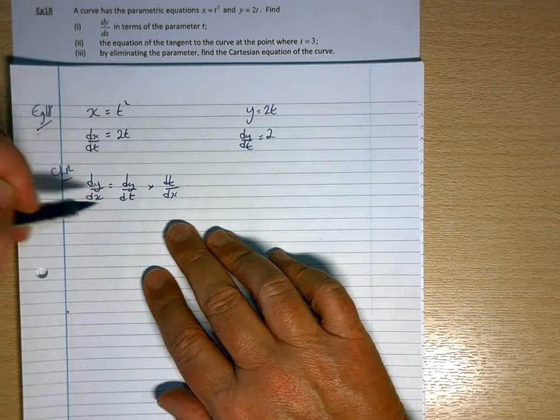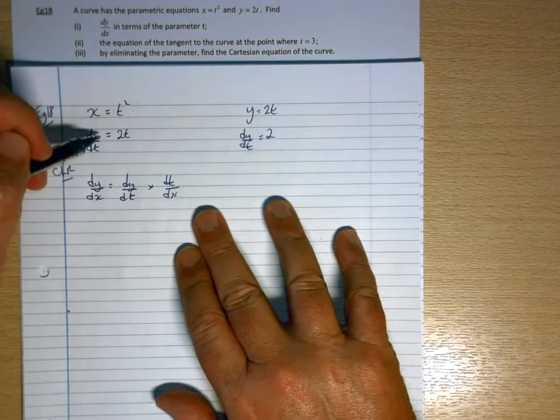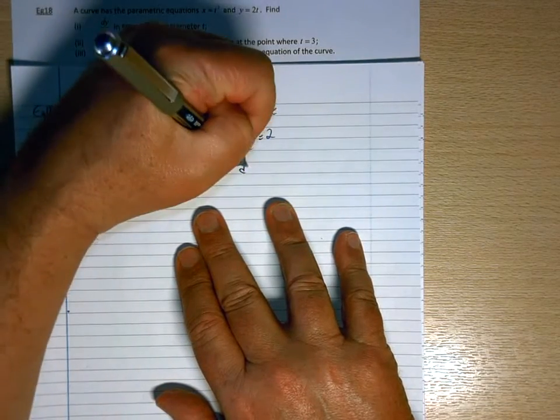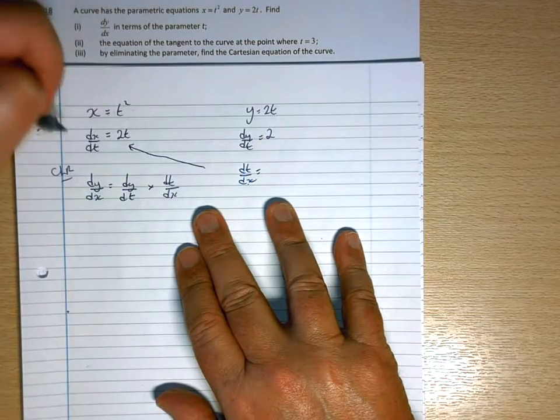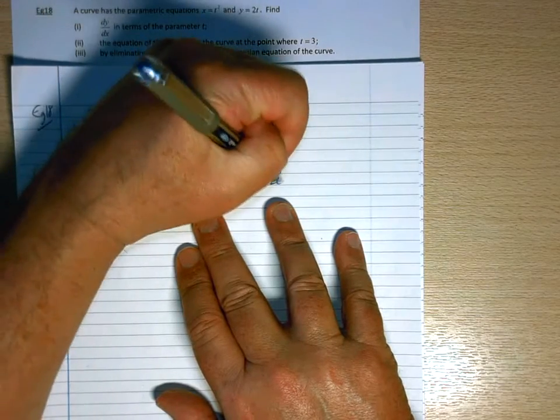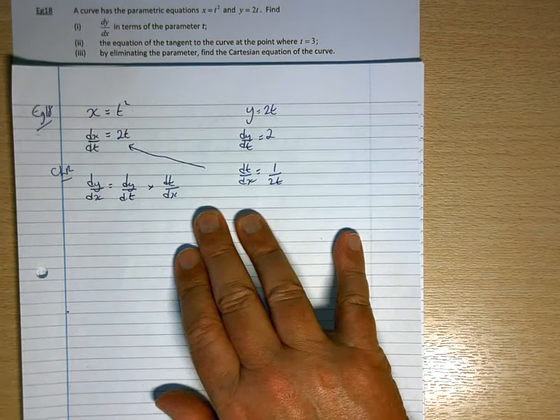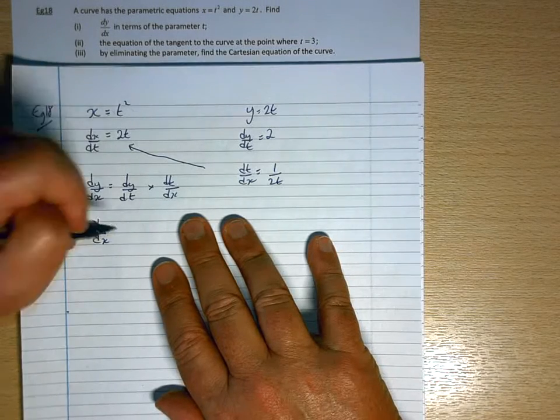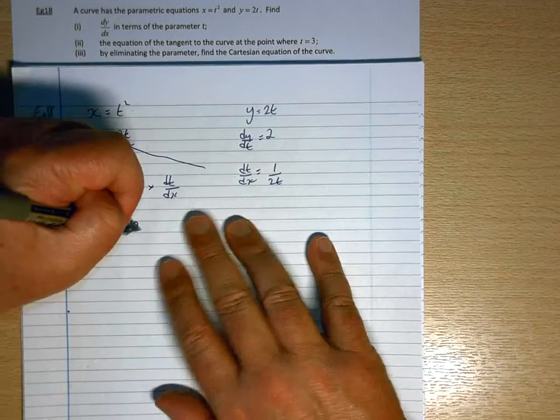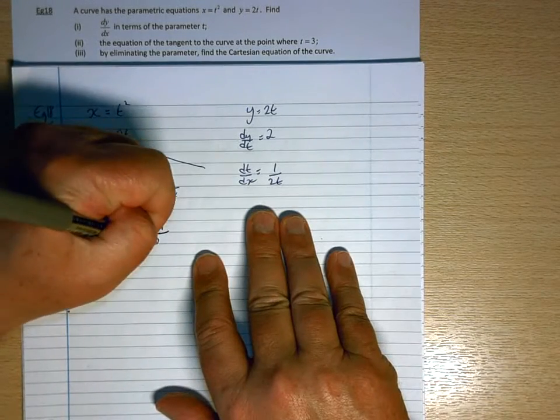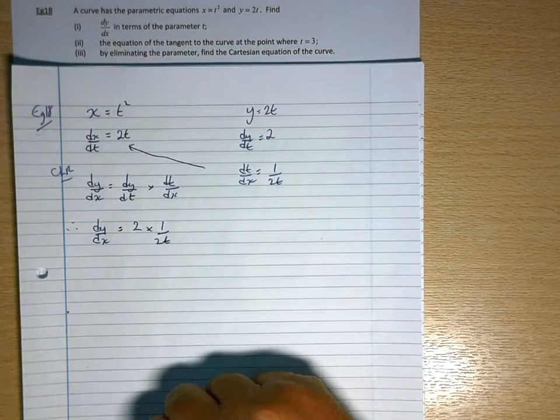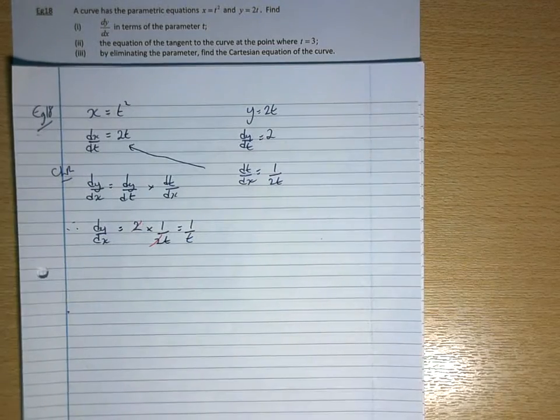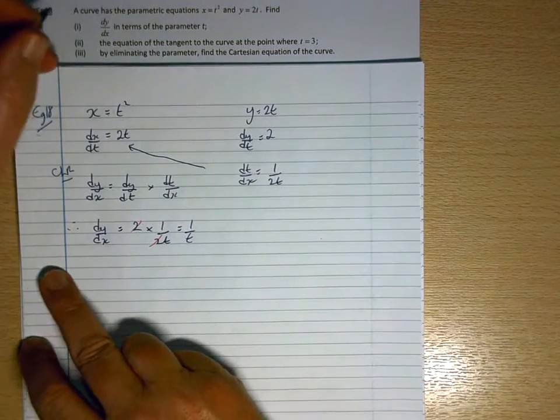Well, dy dt I know is 2. Dt dx would be the reciprocal of dx dt, which would be 1 over 2t, basically turning both sides upside down. So therefore dy dx is going to be dy dt, which is 2 times 1 over 2t. The 2s will cancel. So dy dx is 1 over t. So that's part 1.